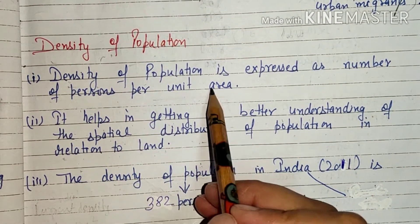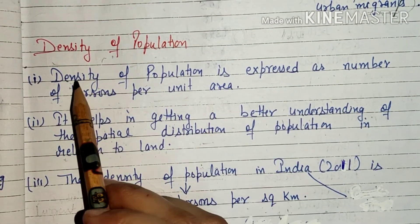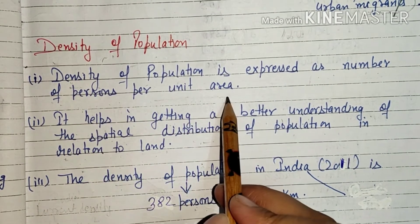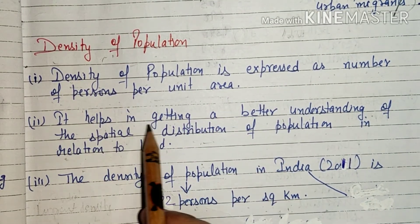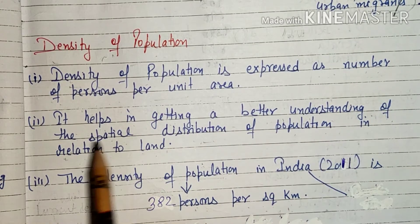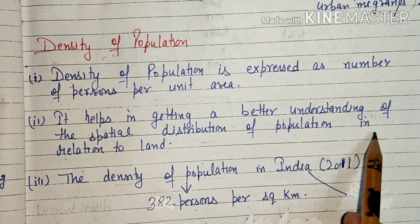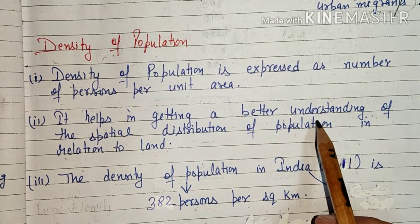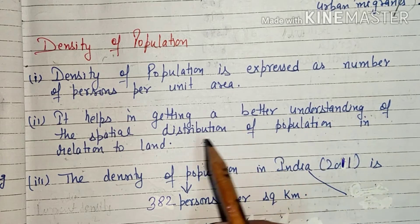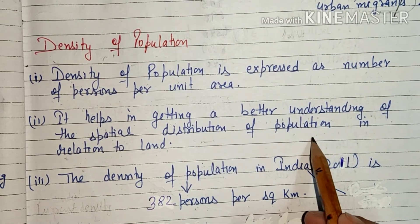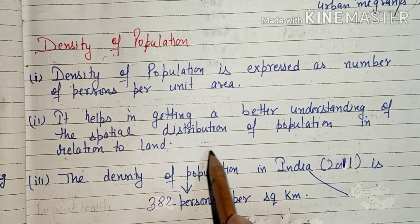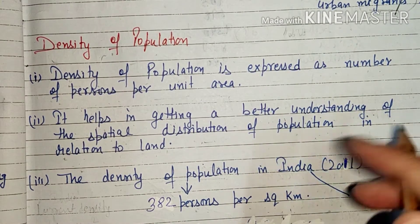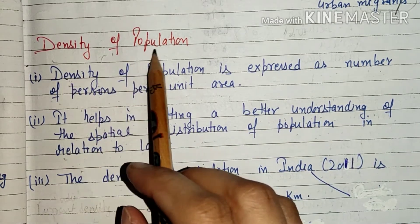Density of population is expressed as the number of persons per unit area. Density of population means how many people live per unit area. It helps in getting a better understanding of the spatial distribution of population in relation to land — meaning, how many people live in a given area. That helps us understand density of population.